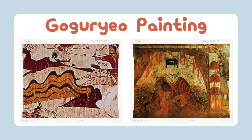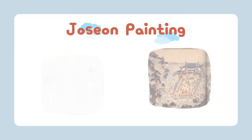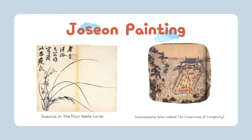The main preoccupation of the artists of Goguryeo was on Buddhist icons and great masterpieces in art. The artists of Joseon, on the other hand, were more interested in representing plants and animals, as seen in art pieces such as Sagunja or the Four Noble Lords, which refers to the combination of orchid, chrysanthemum, bamboo, and plum tree. Also notable is the Sipjangsaeng, also called the Ten Creatures of Longevity. The artists of Joseon were also into landscapes.